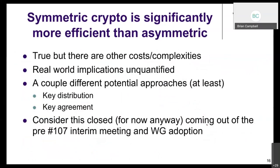On the inefficiency of asymmetric crypto: it is inefficient, but there are other costs involved in doing something different. No real-world quantified implications exist yet. Potential alternatives like key distribution or key agreement have been mentioned, but after discussion before and after the IETF 107 meeting, there wasn't enough interest in pursuing something different, so the current approach stands.